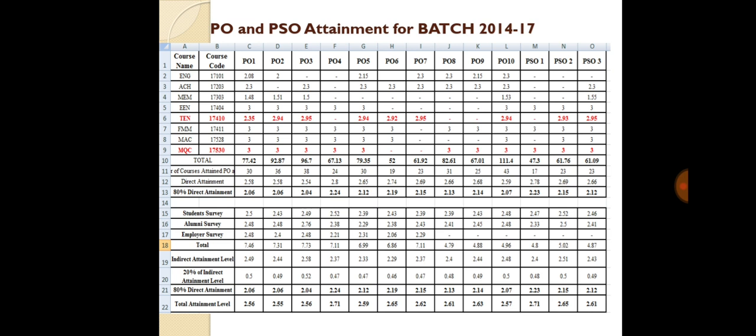From this PO and PSO attainment, we can make a chart for a batch for all subjects. In the second chart, we take the attainment of indirect attainment — student survey, alumni survey, and employer survey — and make a total. We calculate the indirect attainment level with 20% weightage for indirect attainment and 80% weightage for direct attainment, and from that we calculate the total attainment level. In this way, we can do the PO attainment and CO attainment.